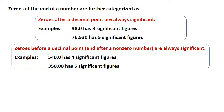Zeros before a decimal point and after a non-zero number are always significant. For example, 540.0 has four significant figures, so all the zeros are counted. In another example, 350.08 has five significant figures. The zeros are lying between two non-zero numbers and also before and after a decimal, so they are counted as significant figures.